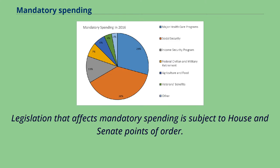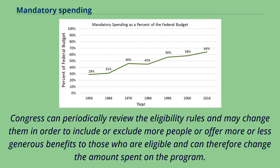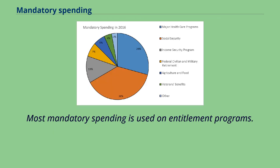Legislation that affects mandatory spending is subject to House and Senate points of order. Congress can periodically review the eligibility rules and may change them in order to include or exclude more people, or offer more or less generous benefits, and can therefore change the amount spent on the program.